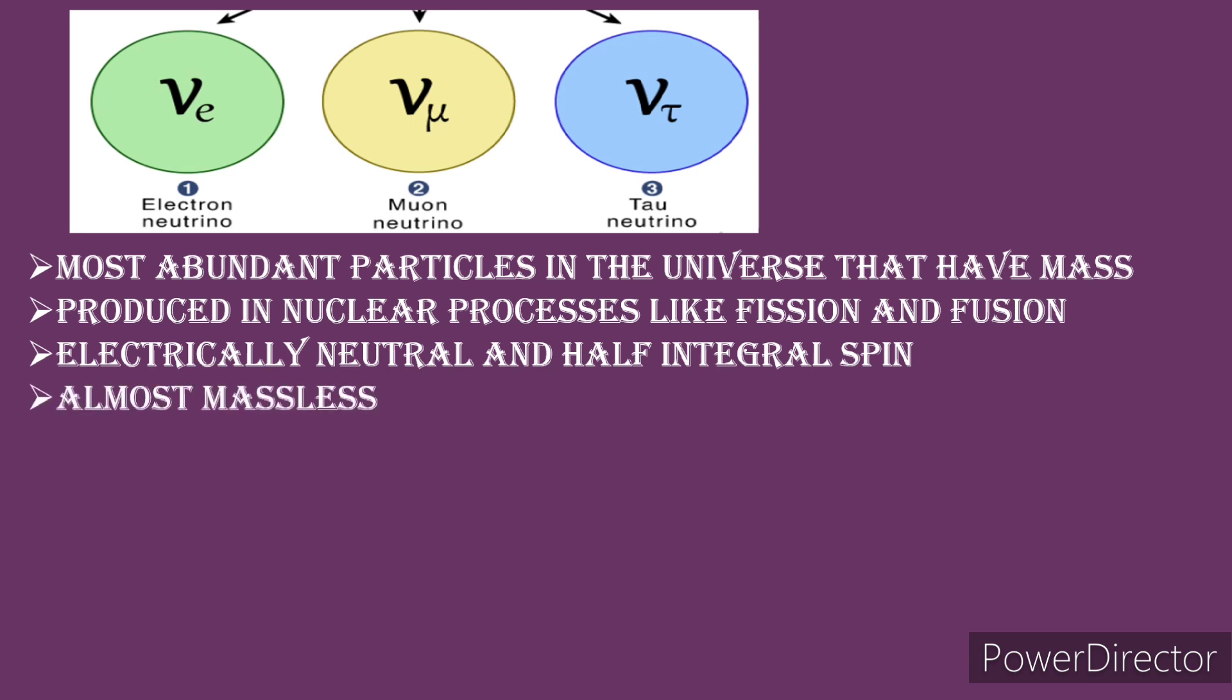Also, neutrinos are almost massless, very low rest mass. This is why we thought for a long time that the rest mass was zero, but it is not zero. It has very small rest mass, but its speed is very high and its speed is comparable to the speed of light.